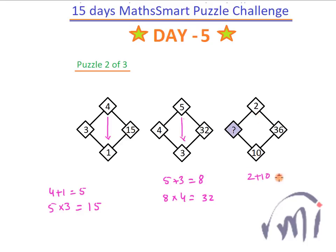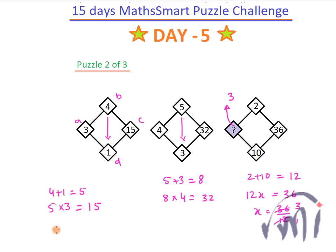So here 2 plus 10 is equal to 12, and if I assume the value of the question mark as x, then 12 multiplied by x equals 36, so x equals 36 divided by 12. Since 12 threes are 36, the value of this question mark is 3. If I name these boxes as a, b, c, and d, then a multiplied by (b plus d) is equal to c.